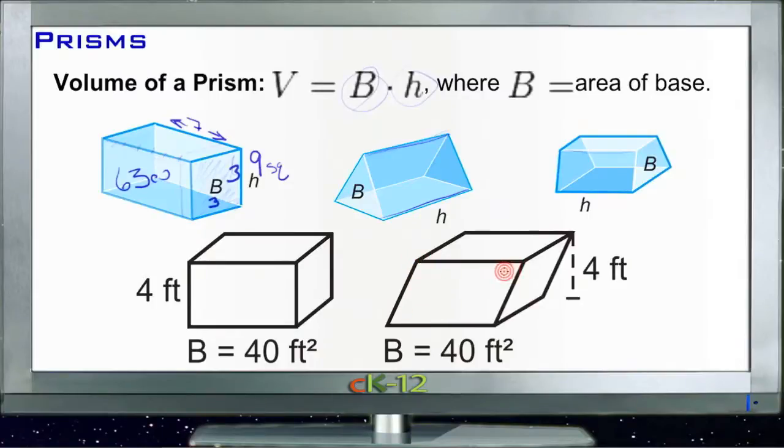If we have a rectangular prism here, a box, and it has a given area on this face here, once we know that area it doesn't matter how the box might be bent or shaped. As long as that area is the same and we know what the height is, the volume of the box is going to be the same.